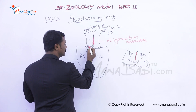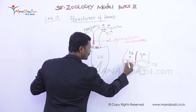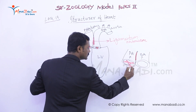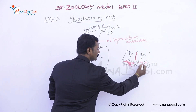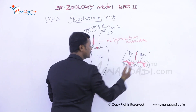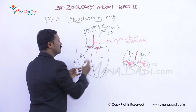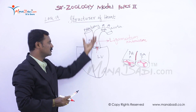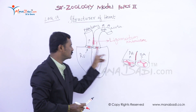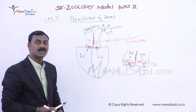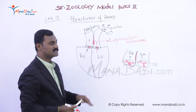At the base of the aorta and pulmonary artery, there are semilunar valves — three in each vessel. These semilunar valves open and close according to heart function, preventing backflow of blood from the aorta and arteries into the ventricles. They can be called the pulmonary valve in the pulmonary artery and the systemic valve in the systemic aorta.